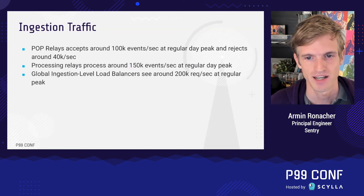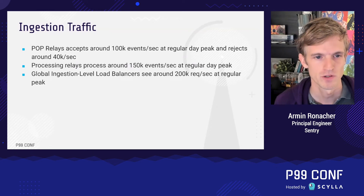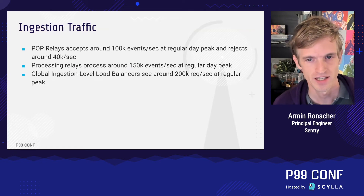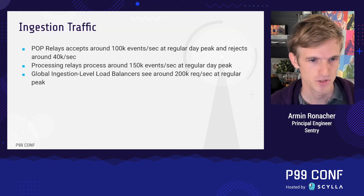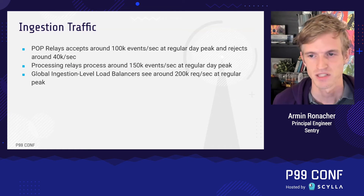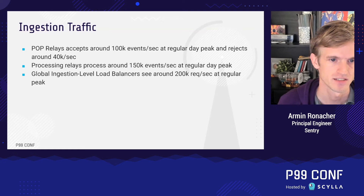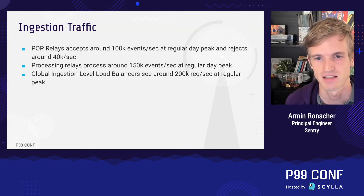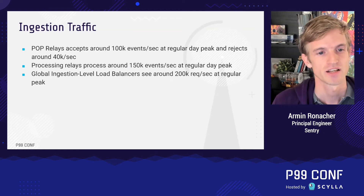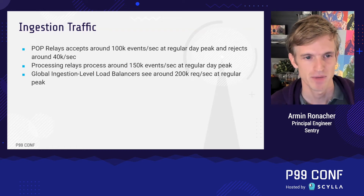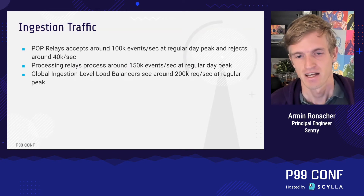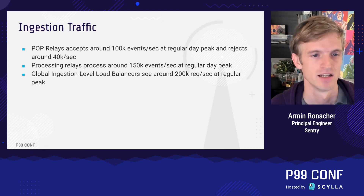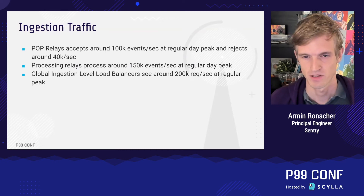Just to give a sense of the scale: the POP relays we operate for Sentry.io directly see around 100,000 envelopes per second coming in, and we check around 40,000 for different reasons such as out-of-quota filtering. The processing relays — the inner layer — actually get more events than the outer layers, because the outer layer throws away some events by aggregating but also creates new events to send to the inner layer. The global ingestion load balancer sees roughly 200,000 events per second. All these numbers are regular day peaks — they can be much higher.